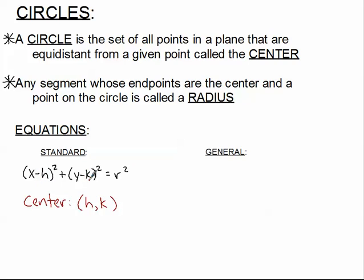Notice that the signs in standard form are subtraction. Watch out when finding h: if you see x − 7, then h is 7; if you see x + 10, then h would be negative 10 — that's the only way you can get a plus there. The radius is r, and notice in standard form it's the radius squared, so you'll need to take the square root to find the actual radius.